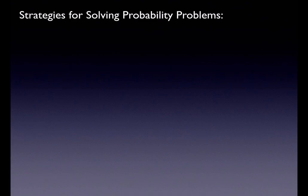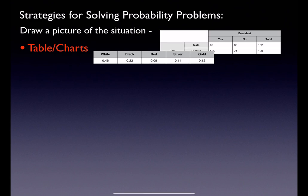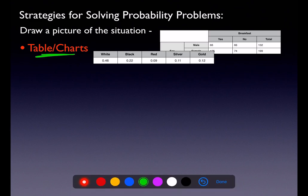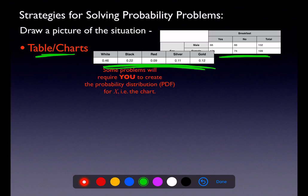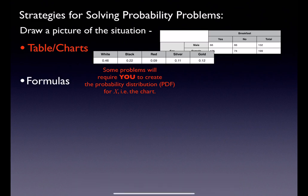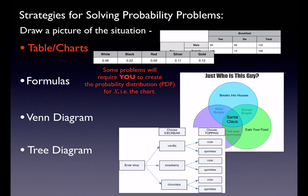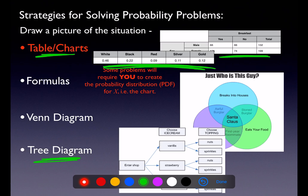In terms of getting that bottom row: sometimes the probabilities are just given to you, and sometimes they're not. If they're not given, draw a picture of the situation — a lot of them involve tables and charts. When you have to create your own PDF table, you'll sometimes use formulas from Chapter 3: the addition rule, multiplication rule, independence formulas, or mutually exclusive formula. You might also need a Venn diagram or a tree diagram — tree diagrams come up the most often.